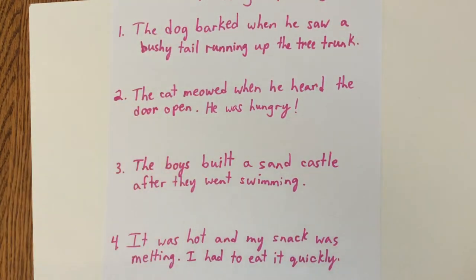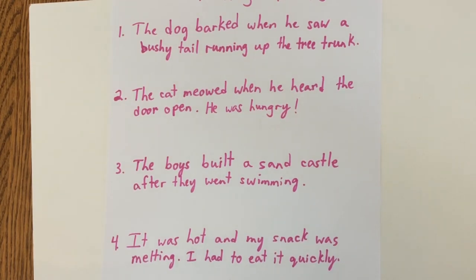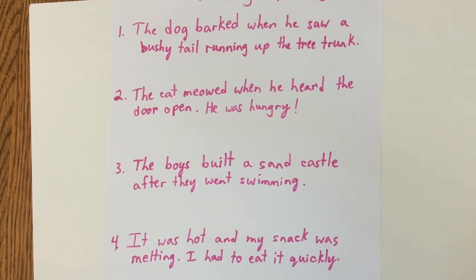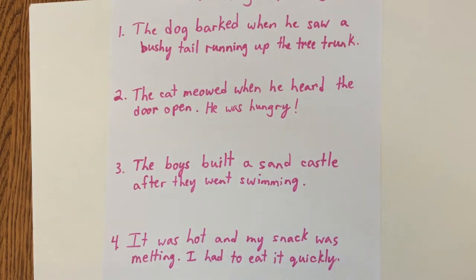Now to go over the answers. Number one: most likely a squirrel. Number two, what did the cat want? The cat wanted food. Any cat owners out there would know with the meowing that they usually want something. Number three, the boys built a sandcastle — where were they? They were not at a pool. You can go swimming at a pool, but you can't build a sandcastle there. So they must have been at a beach because you can do both swimming and sandcastle-building there.